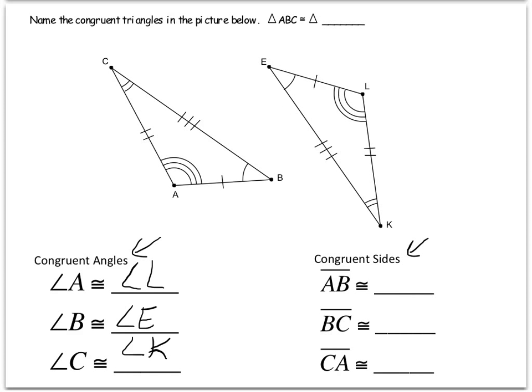Then when we talk about the congruent sides, we've got side AB is congruent to side LE. It's important to note that since A matched up with vertex L and B matched up with vertex E, I labeled this in the same order, L and then E.